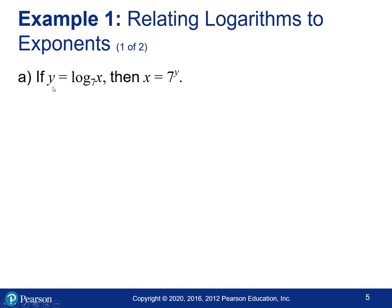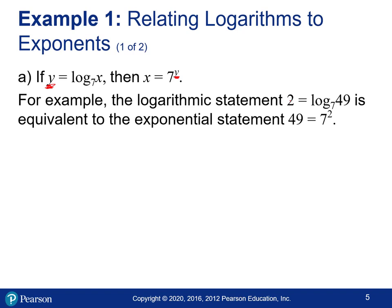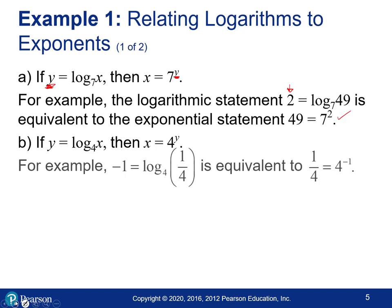For y equals log base 7 of x, that means x equals 7 to the y power — the log always equals the exponent. So if we had 2 equals log base 7 of 49, it means 2 is the exponent, so 7 to the second power is 49 — a true statement. For y equals log base 4 of x, if we say negative 1 equals log base 4 of one-fourth, it's because negative 1 is the exponent: 4 to the negative 1 moves to the denominator, giving one-fourth.